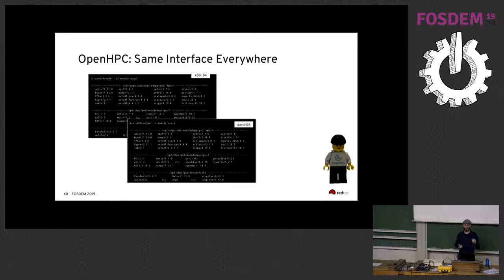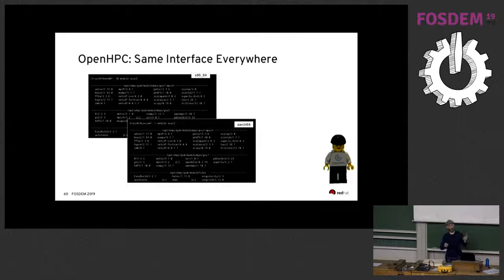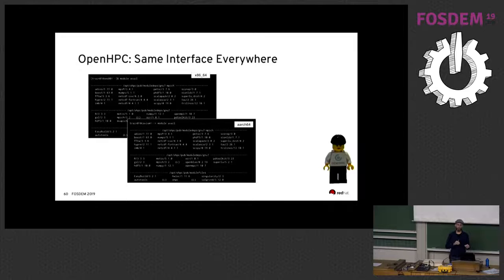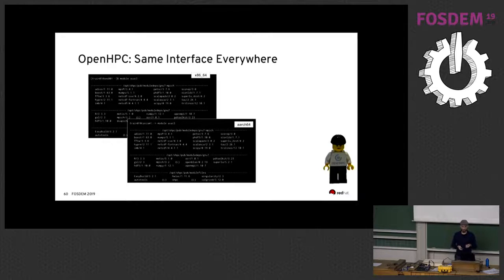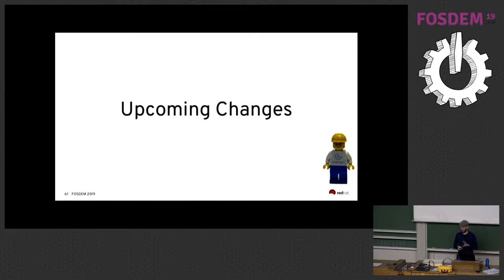Once you have everything installed and running, you get a user interface using environment modules that looks the same regardless of the operating system or architecture. Users don't have to change any paths or module names — OpenHPC systems always come with the same paths and environment module names.